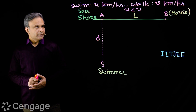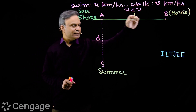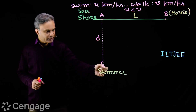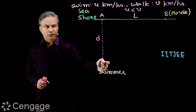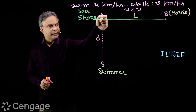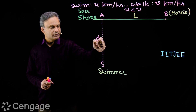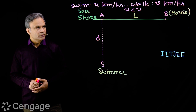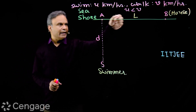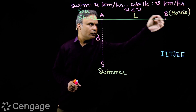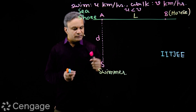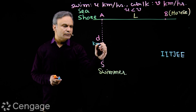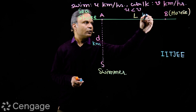The question is: there is a seashore, and C is on this side. There is a swimmer S here in the sea. A is the nearest point on the shore, at distance D from the swimmer, and the house of the swimmer is on the shore at distance L from point A. All the distances are in kilometers — D kilometers and L kilometers.